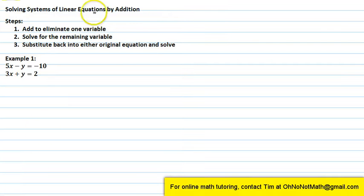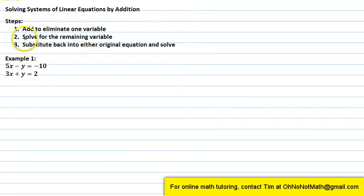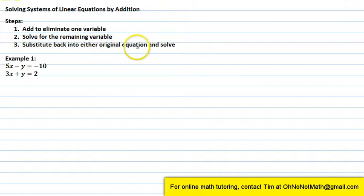Solving systems of linear equations by addition. There are three basic steps. Step one is to add to eliminate one variable. Step two, solve for the remaining variable. Step three, substitute back into either original equation and solve.